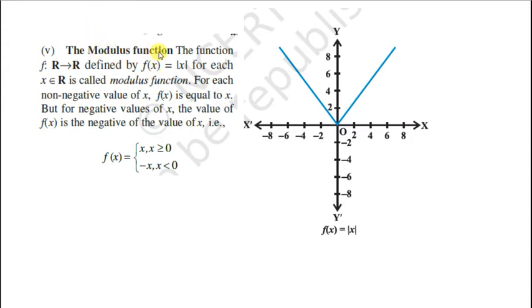This is the modulus function. The function from R to R defined by f(x) equal to mod x, for each x belonging to R, it is called the modulus function. Modulus function ki value hamesha positive aati hai. Toh agar x positive hai, toh mod x ki value x rahe ki as it is. Aur agar x negative hai, toh use positive banane ke liye, uska negative nikale. Isliye, jab x negative hoga, toh f(x) ki value minus of x ho jayegi.